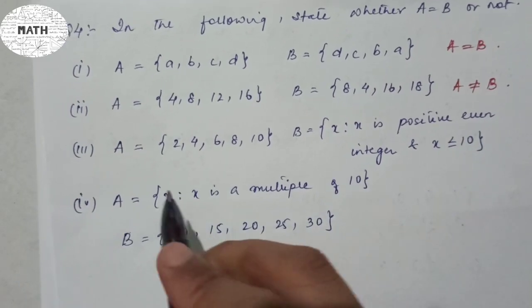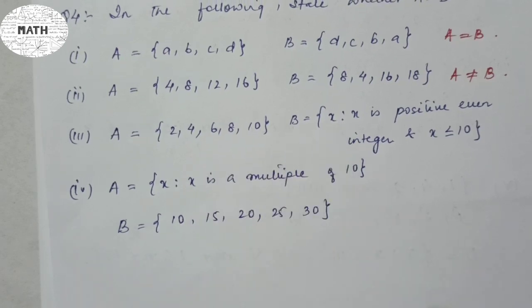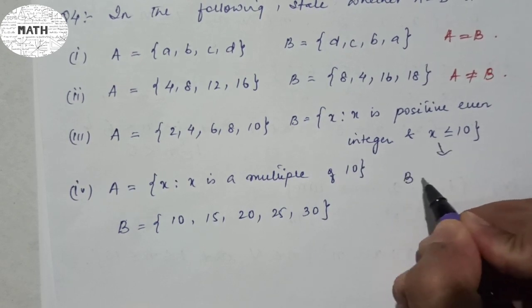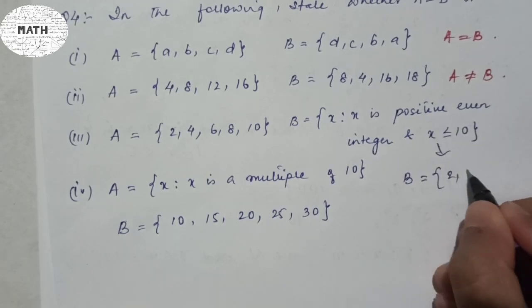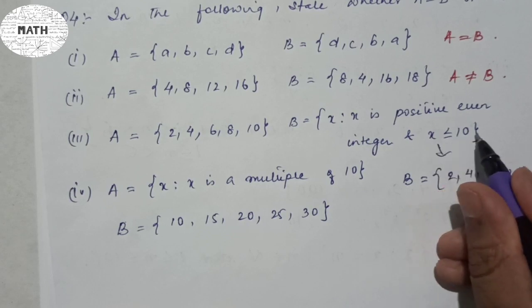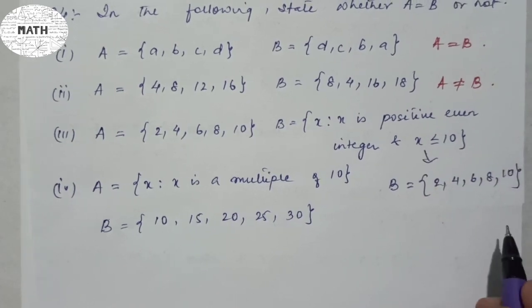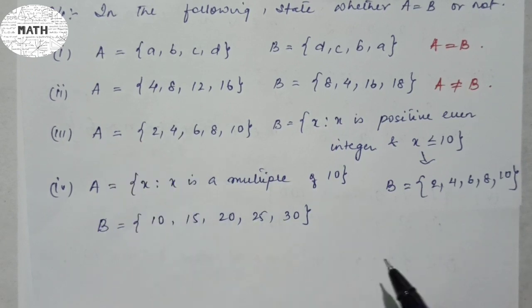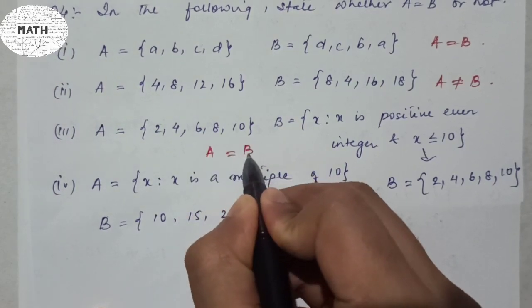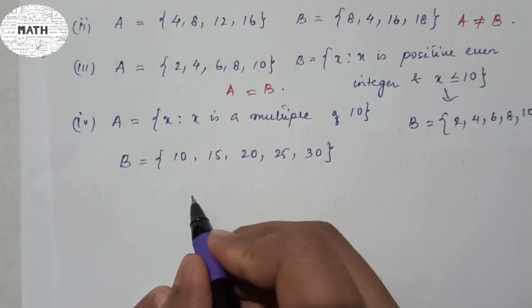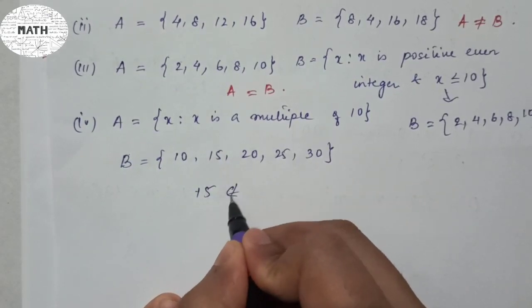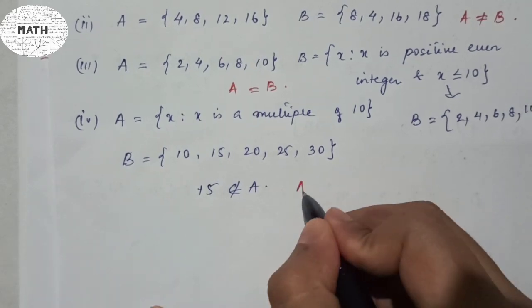Number three: A = {2, 4, 6, 8, 10} and B = {x : x is a positive even integer, x ≤ 10}. Writing B in roster form gives {2, 4, 6, 8, 10}, so A = B. Number four: A = {x : x is a multiple of 10} and B = {10, 15, 20, 25, 30}. Since 15 is not a multiple of 10, 15 does not belong to A, so A ≠ B.